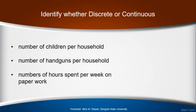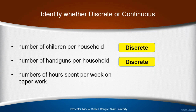We have three remaining variables — they are all quantitative, but let's identify which are discrete and which are continuous. Number of children per household: do you count children or measure them with a device? You count them, so it's discrete. Number of handguns per household: 'number' gives us the clue that we count it, so it's also discrete. Number of hours spent per week: hours can be measured with a watch, and it is possible to work 1.5 hours — meaning 1 hour and 30 minutes — or 2.3 hours, which is still meaningful. That makes it continuous.